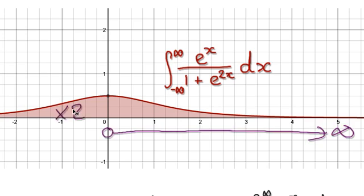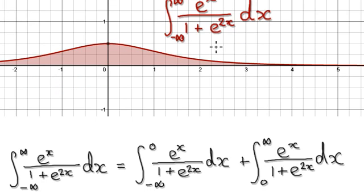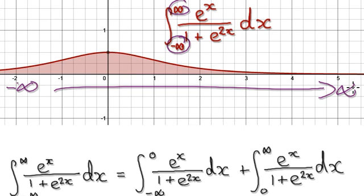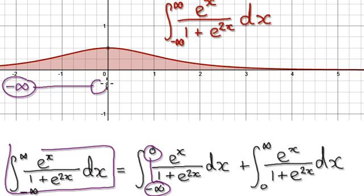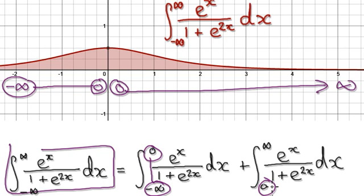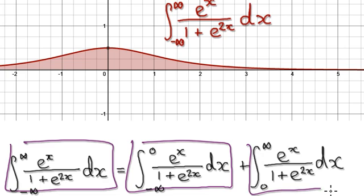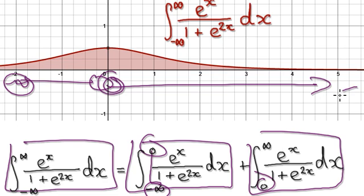But let's do this as if we didn't know it was an even function. In order for us to integrate from negative infinity all the way to positive infinity, we would break it up into two parts: from negative infinity all the way to 0, and then from 0 all the way to positive infinity.